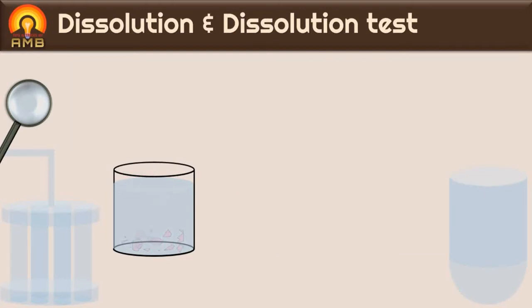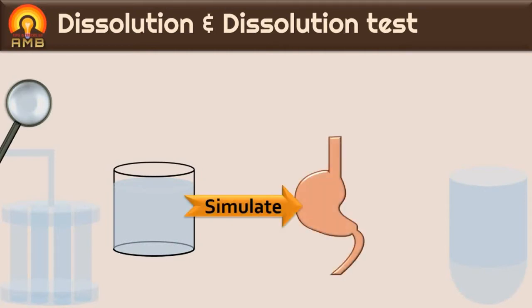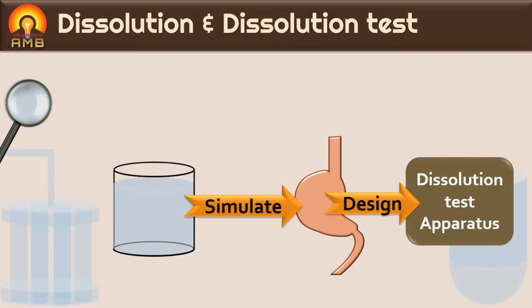In vitro means outside the body. Even though we are testing it outside the body, we have to simulate or create the conditions or environment same as that of inside the body. Hence, a special apparatus is designed to determine dissolution time of the tablet. The apparatus used for dissolution test is called the dissolution test apparatus, and all the specifications of this apparatus are given in the Indian Pharmacopoeia.